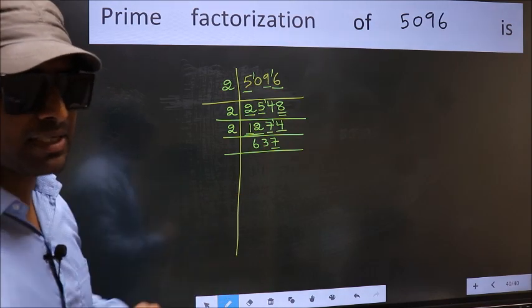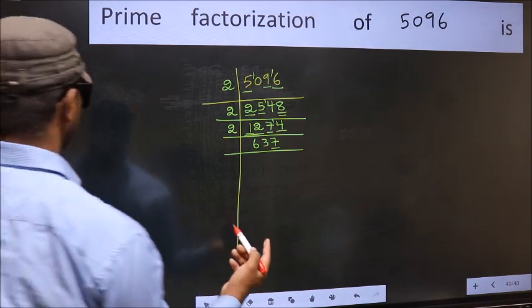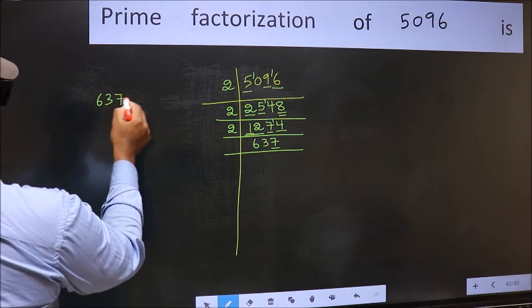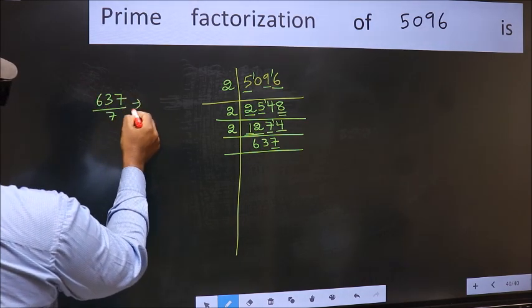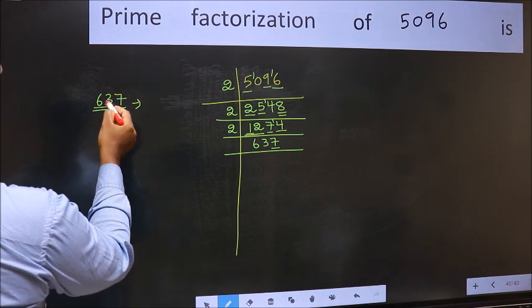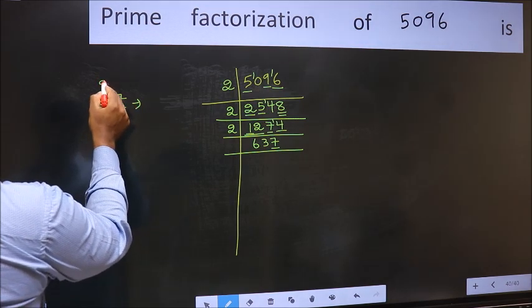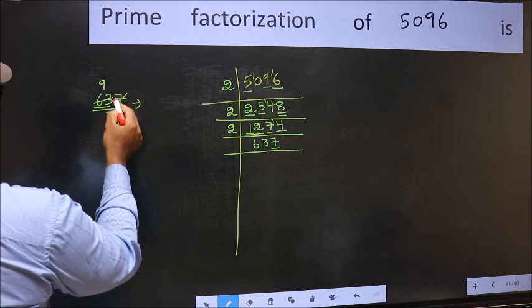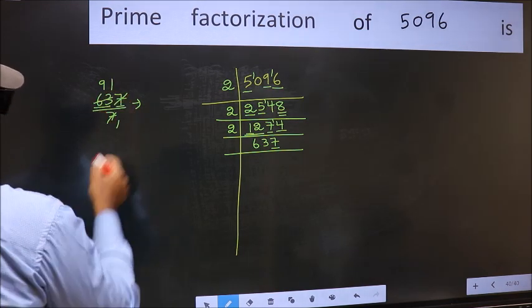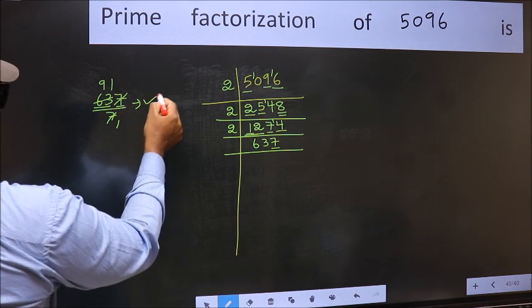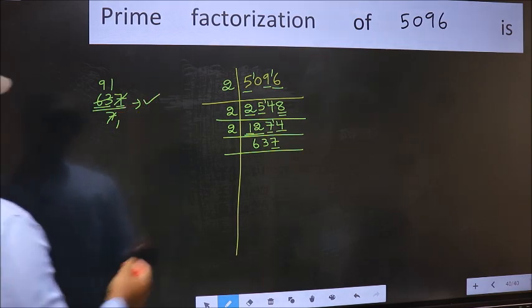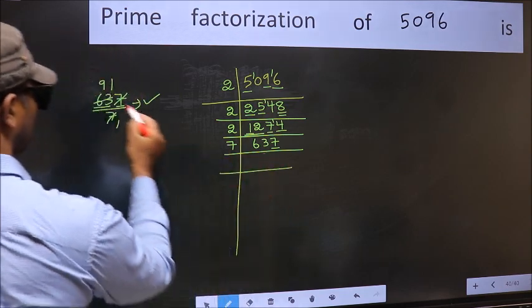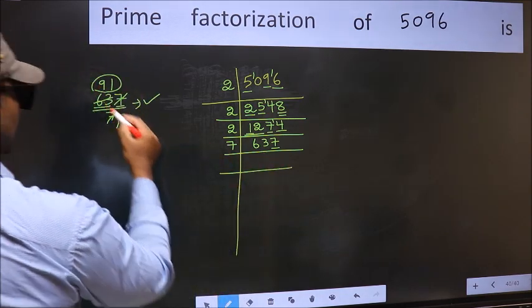Next prime number is 7. Let us check divisibility by 7. When do we get 63 in the 7 table? 7 times 9 is 63. The other number 7 — when do we get 7 in the 7 table? 7 times 1 is 7. No number has been left out, so this is divisible by 7. So we write 7 here, and here we write 91.